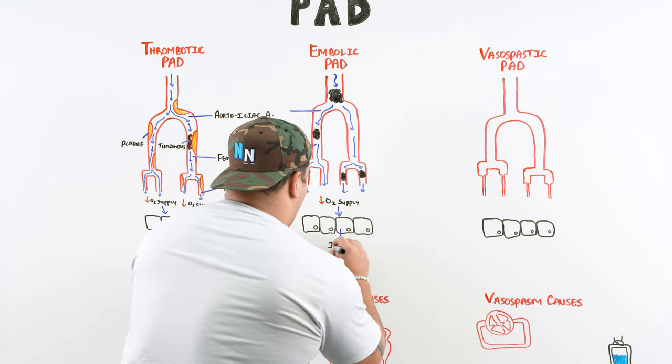In severe cases of acute limb ischemia, if untreated and blood flow is absent for a prolonged period, gangrene can develop. Vasospastic PAD can also cause acute limb ischemia, typically of the distal extremities, with patients developing very decreased pulses and cyanosis or necrosis of the digits. This covers the main complications of PAD: intermittent claudication, critical limb ischemia, and acute limb ischemia.